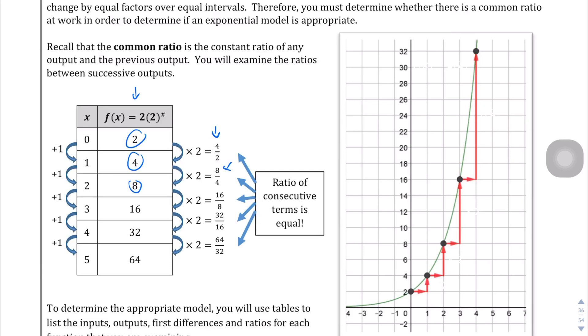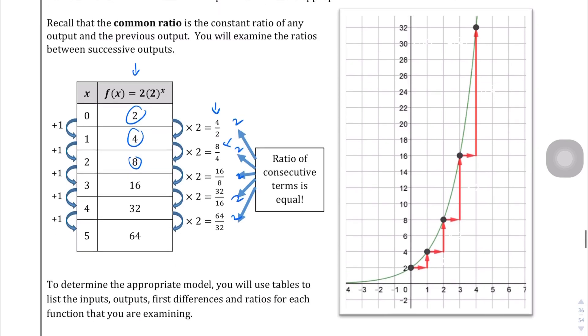You'll see that those ratios are equal, because 4 divided by 2 is 2, 8 divided by 4 is 2, and so on. So when the first or second differences are not equal, you'll have to check to see whether the ratios of the f(x) term, the function terms, or the y values, are constant or not.